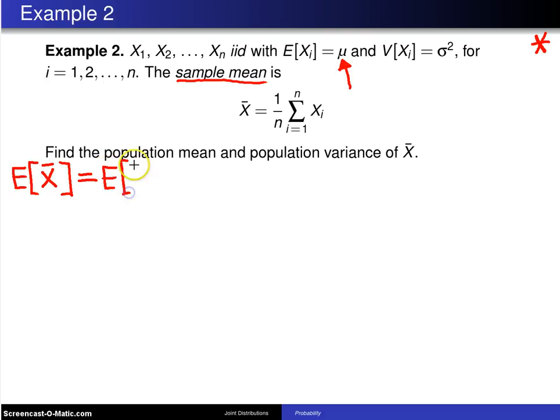x̄ is defined to be 1 over n times the sum of the x sub i's, and this 1 over n is a constant. It is not a random variable, and you know the constants can come out front of the expected value operator. And now we are left with the expected value of a sum. Well, you know the expected value of a sum is the sum of the expected values all the time.